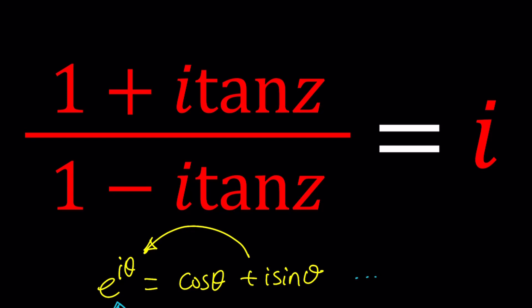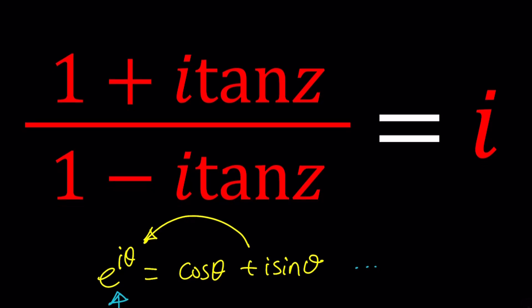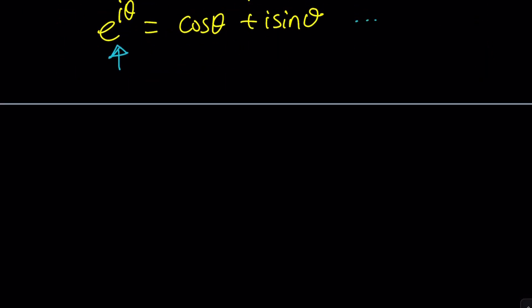Now, this doesn't have sine or cosine, but it has tangent. Now, take a look at this. 1 plus i tangent z can be written as 1 plus i times sine z over cosine z. And then, if you factor out 1 over cosine z, you're going to get cosine z plus i sine z.